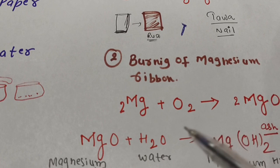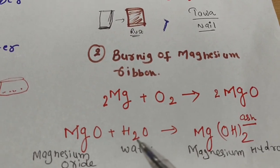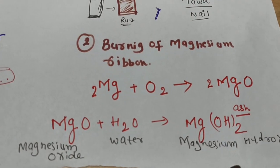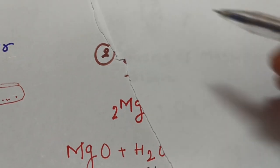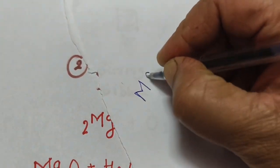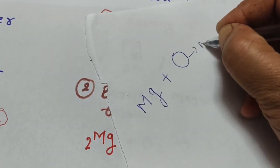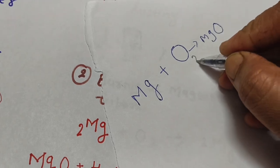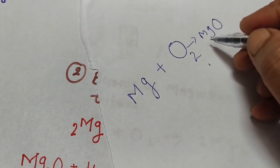When we take magnesium oxide, which is the ash produced, and react it with water, we get magnesium hydroxide. If you understand the reaction: magnesium reacts with oxygen. The formula for magnesium is Mg, it reacts with O2, and what do we get? MgO.